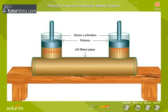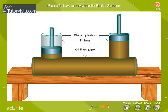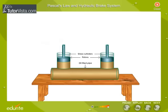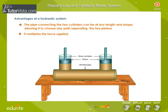Most of the applied force appears at the second piston. The advantage of hydraulic systems is that the pipe connecting the two cylinders can be of any length and shape, allowing it to choose any path separating the two pistons. Another advantage of a hydraulic system is that it multiplies the force applied.